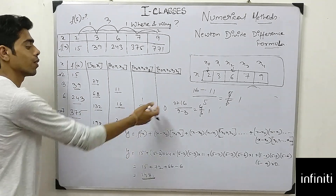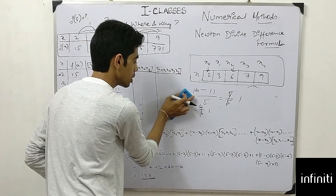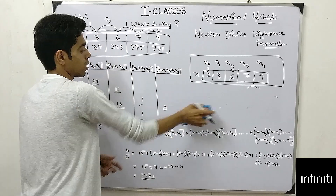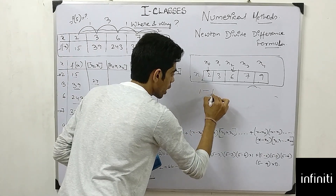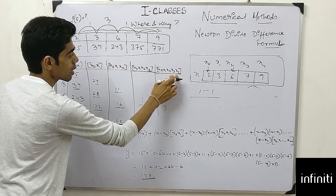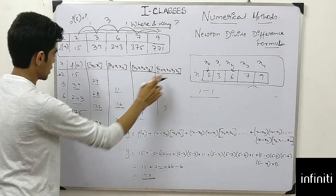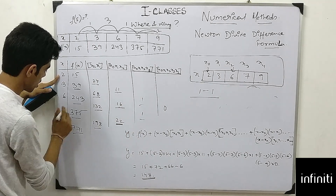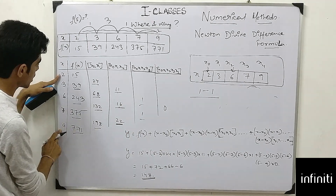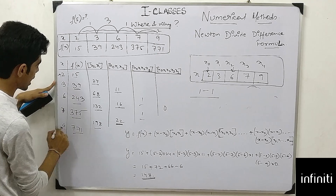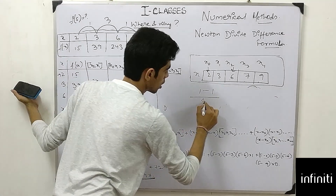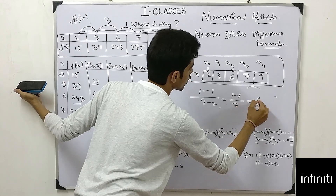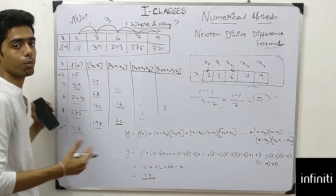Now if I subtract this from this it will be 0, but I am showing you to make it clear. For f[x0, x1, x2, x3, x4]: 1 minus 1, divided by x4 minus x0, where x4 is 9 and x0 is 2, so 9 minus 2 is 7. This gives 0 divided by 7, which is 0, completing the divided difference table.